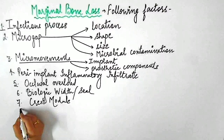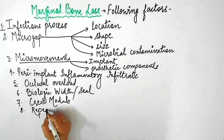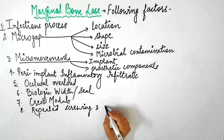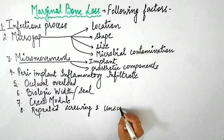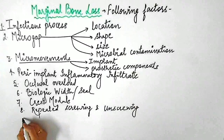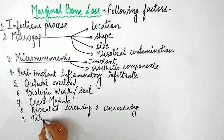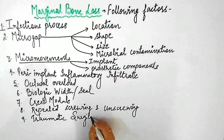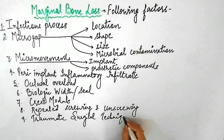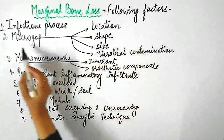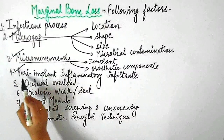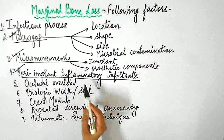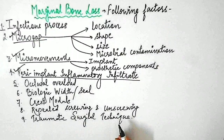In this video, I'll talk about the rest of the factors influencing marginal bone loss like occlusal overload, biologic width, crest module, repeated screwing and unscrewing, and traumatic surgical technique. I'll also briefly talk about the concept of platform switching in dental implants in this video. So if you want to gain some knowledge about the above mentioned topics, then continue watching.